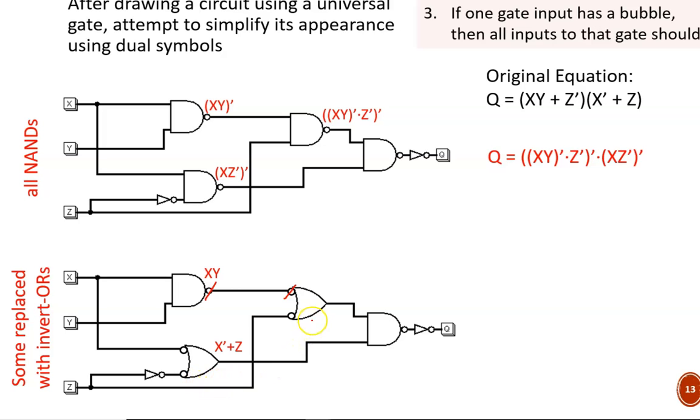For the middle NAND gate, we are ignoring this top bubble. So that signal is just X and Y. The bottom bubble is applied to Z. So the result is XY or Z prime. Finally, this double bubble on the output is ignored, and we effectively have a simple AND operation. So the resulting equation is Q equals XY or Z prime quantity ANDed with X prime or Z. I'm sure you'll agree this equation is much easier to understand than the previous but equivalent one, and thus the advantage of drawing diagrams with strategically placed dual symbols.